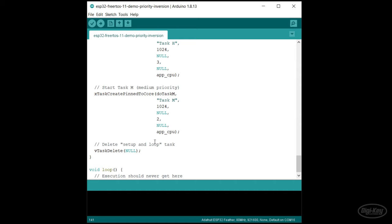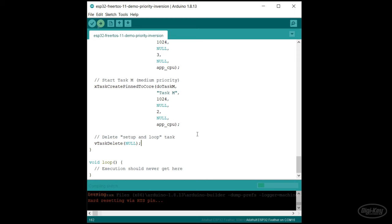After I start the other two tasks, I delete the setup and loop task. Let's upload this to the ESP32. Open the serial monitor. Right away, you should see priority inversion occur.